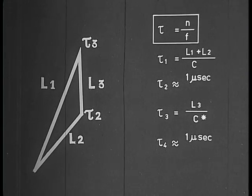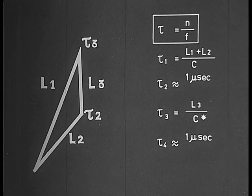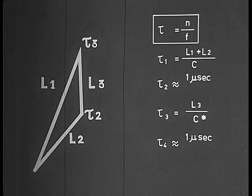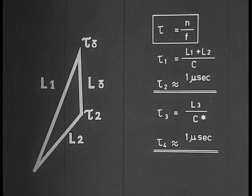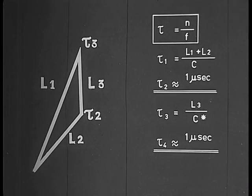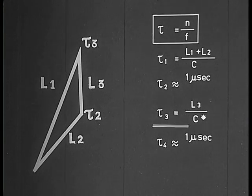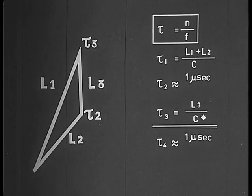Tau 1, Tau 2, Tau 3, and Tau 4 were deduced from the photographs. Tau 2 and Tau 4 were found to be of the order of a microsecond.